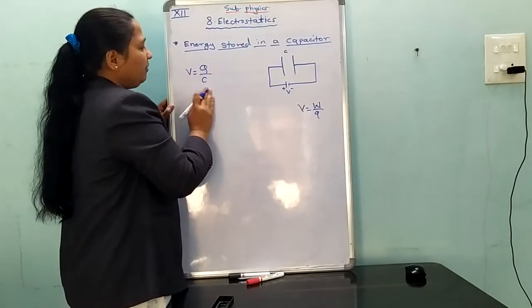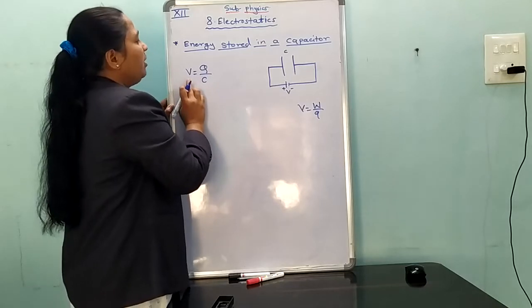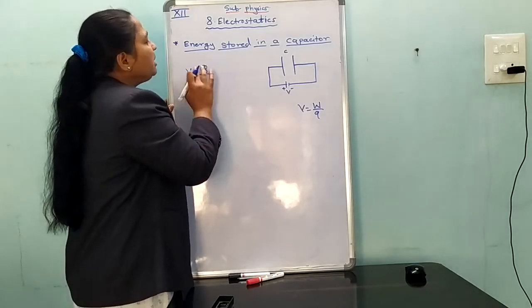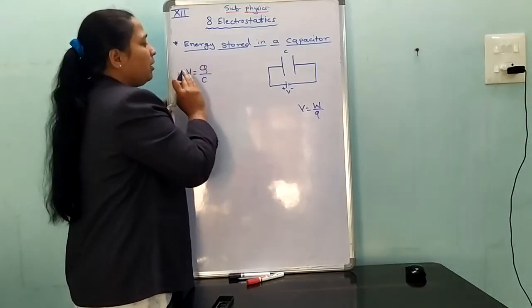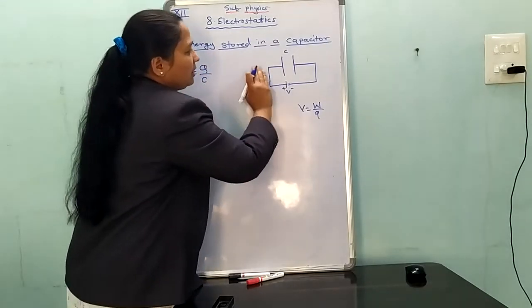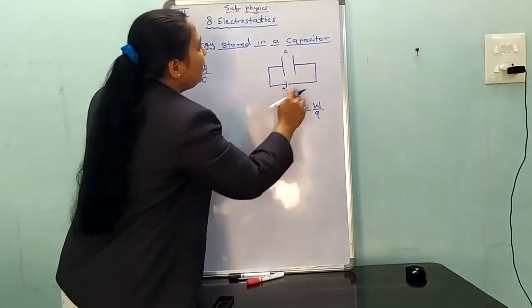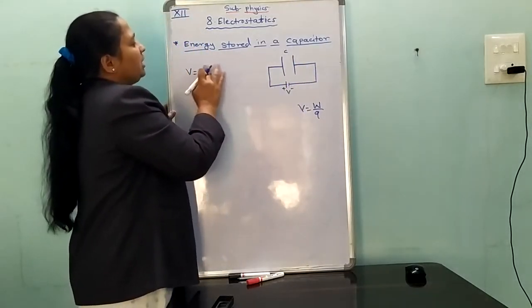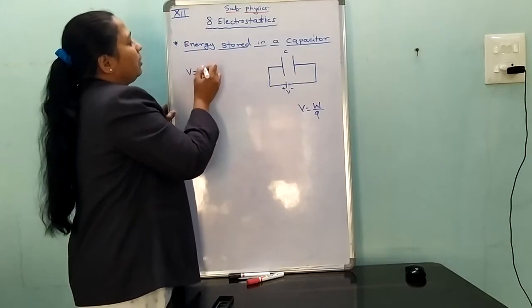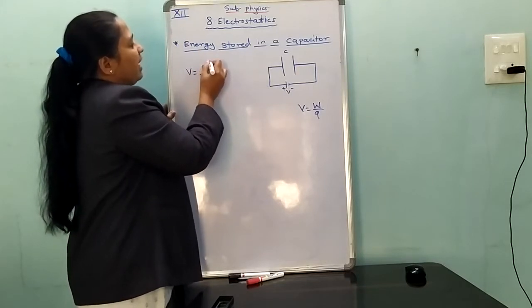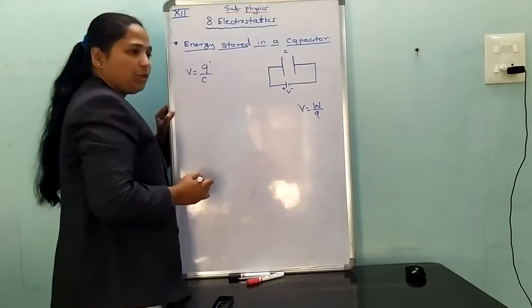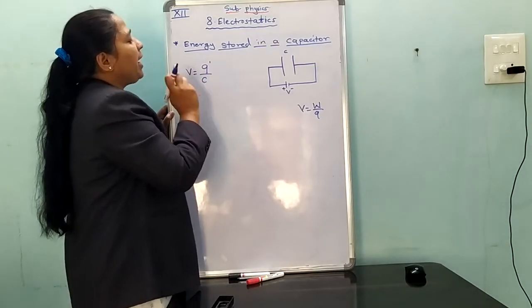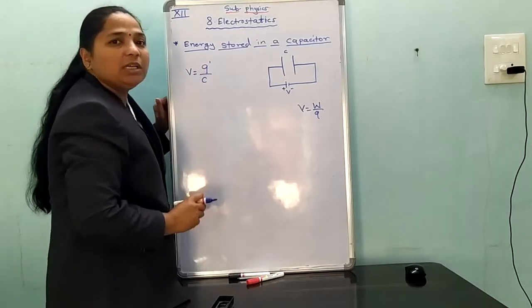That formula V is equal to Q upon C is referred. But at the intermediate stage, complete charging is not yet done. Therefore, the intermediate charge is considered as Q dash, so V is equal to Q dash upon C.